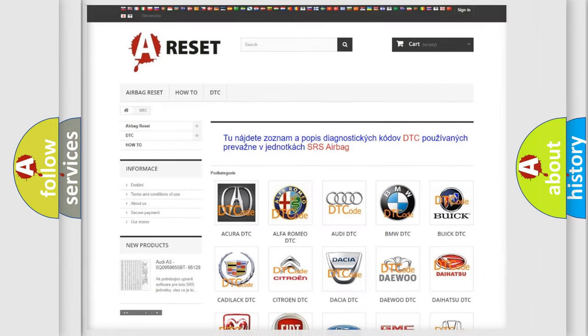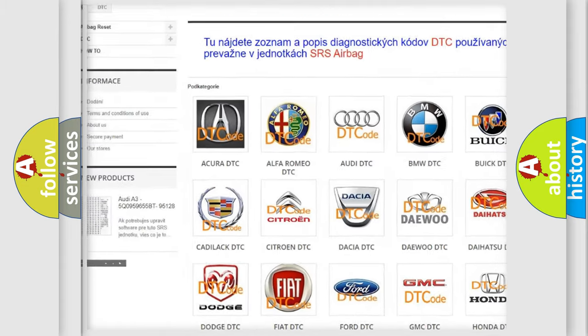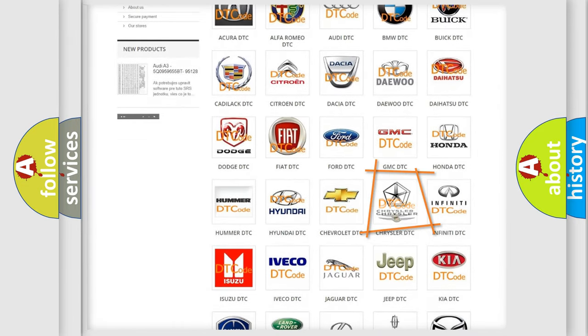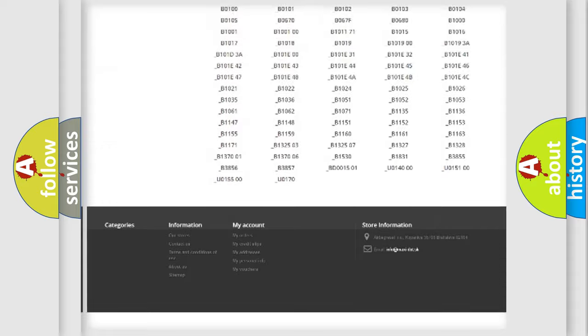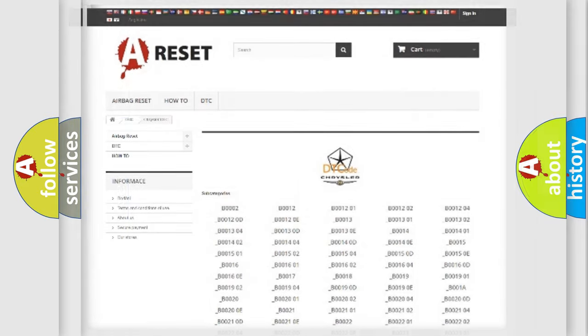Our website airbagreset.sk produces useful videos for you. You do not have to go through the OBD2 protocol anymore to know how to troubleshoot any car breakdown. You will find all the diagnostic codes that can be diagnosed in Chrysler vehicles and many other useful things.